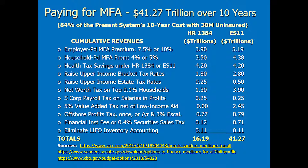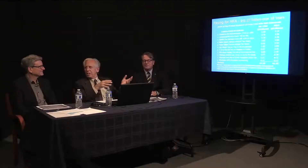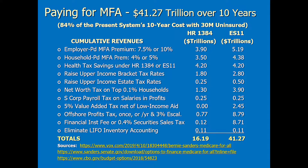Finally, eliminate LIFO inventory accounting. LIFO means last in first out. In an economy where prices tend to rise over time, your inventory today if costed as last in first out would be at higher costs than your first inventory years ago. The current accounting system allows you to cost inventories at the current cost, which is typically higher than before — giving you a higher write-off against your taxes. It's a completely fictional way of evaluating inventory. Eliminating that will raise, doing the same as house bill 1384, $0.11 trillion over 10 years. So we can raise the $41.27 trillion with this approach.